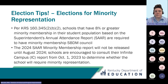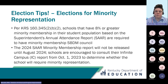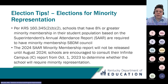Election season is coming up, so over the next couple of months we will be sharing some election tips. This month's election tips are for minority representation elections. As a reminder, any school with 8% or greater minority membership in their student population, based on the superintendent's annual attendance report or the SAR report, are required to have minority membership on their SBDM council. Because the 2024 SAR minority membership report will not be released until August 20th of 2024, schools are encouraged to consult their Infinite Campus report from October 1st, 2023 to determine whether the school will require minority representation.